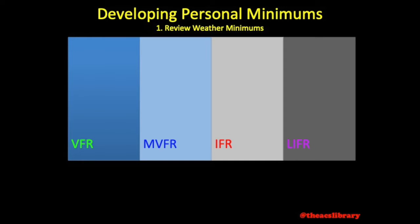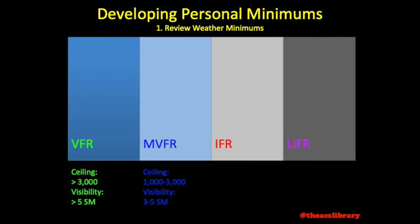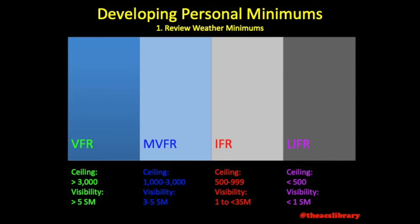VFR, or visual flight rules, conditions include ceilings above 3,000 feet AGL and visibility greater than 5 statute miles. Marginal VFR conditions include ceilings between 1,000 and 3,000 feet AGL and/or 3 to 5 statute miles visibility. IFR conditions include ceilings from 500 to 999 feet AGL and 1 to 3 statute miles visibility. Low IFR conditions include ceilings below 500 feet and visibility below 1 mile.